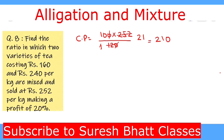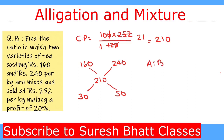Now we apply the allegation rule. Variety A costs ₹160 per kg and variety B costs ₹240 per kg, with a mean cost price of ₹210. Subtracting: 240 − 210 = 30 and 210 − 160 = 50. So variety A : variety B = 30:50 = 3:5. When we mix tea variety A with variety B in the ratio 3:5, selling at ₹252 per kg gives a profit of 20%.